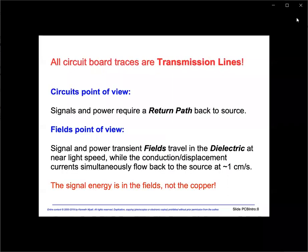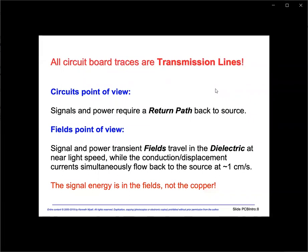There are two ways to view how signals move in PC boards: the circuits point of view and the fields point of view. In reality they are related — you can't have one without the other. The circuit theory point of view considers only that signals and power return back to their sources. Some EMC seminars still focus on currents flowing in loops, which is accurate but only part of the story. To fully understand low EMI PC board design requires we also consider how the signal energy in the form of an electromagnetic wave propagates in circuit boards.